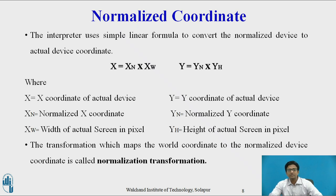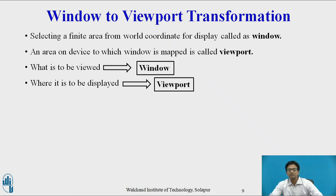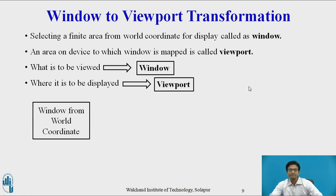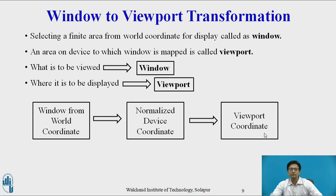The transformation which maps world coordinates to normalized device coordinates is called normalization transformation. Window to viewport transformation: a window is nothing but selecting a finite area from world coordinates for display, and a viewport is an area on the device to which the window is mapped. What is to be viewed is defined by the window, and where the image is to be displayed is defined by the viewport. The window from world coordinates is mapped to normalized device coordinates, and from there it is mapped to viewport coordinates — that is, your screen coordinates.